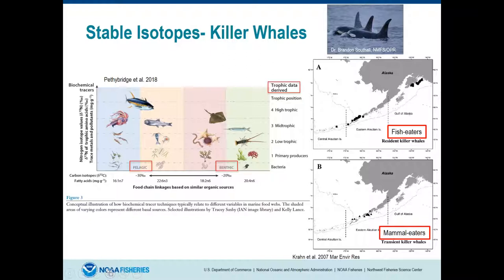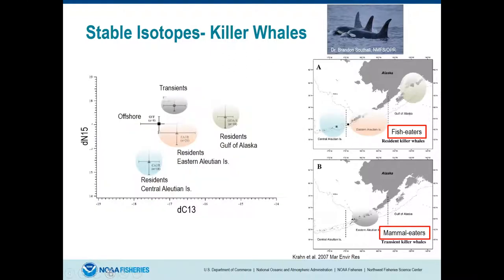Crono found spatial variability in killer whale isotopes from central to eastern Aleutians to the Gulf of Alaska, varying along the carbon axis. Gulf of Alaska residents showed slightly higher nitrogen, indicating they feed on critters a little higher in the trophic level. Transients, as expected, were higher on the nitrogen scale — they eat primarily mammals, consistent with a higher trophic level. Population groupings indicated foraging was relatively localized, with groups differentiated based on their carbon and nitrogen signatures.